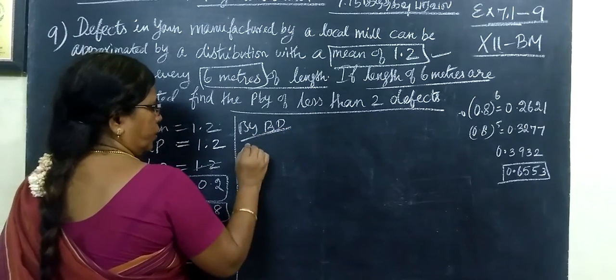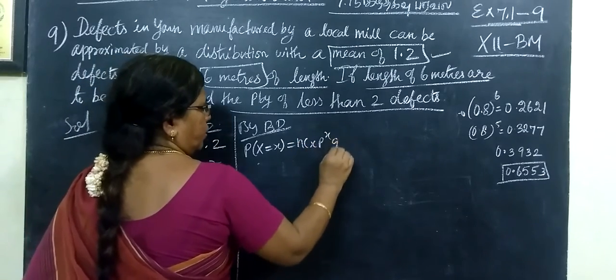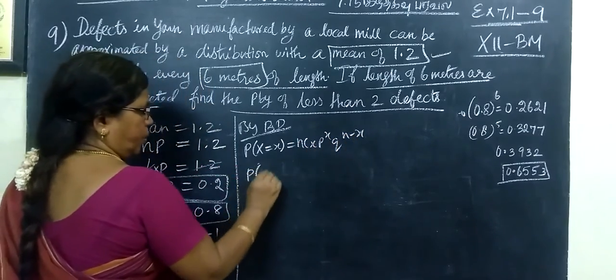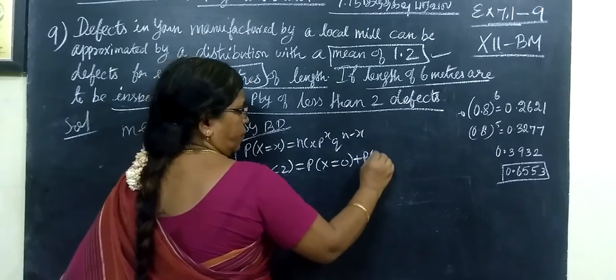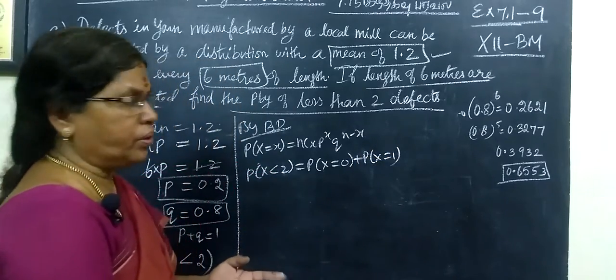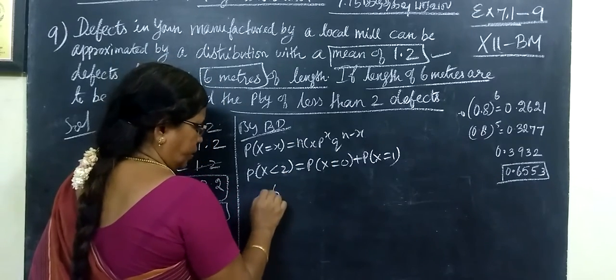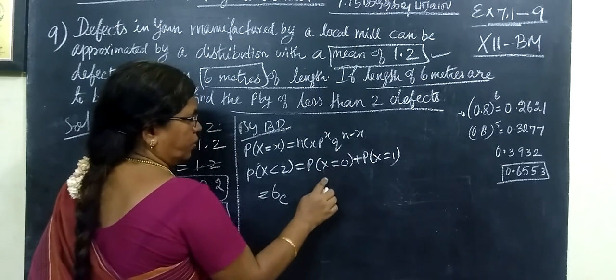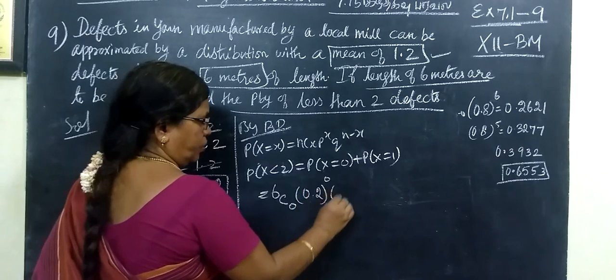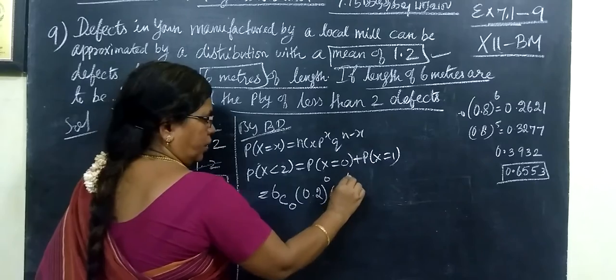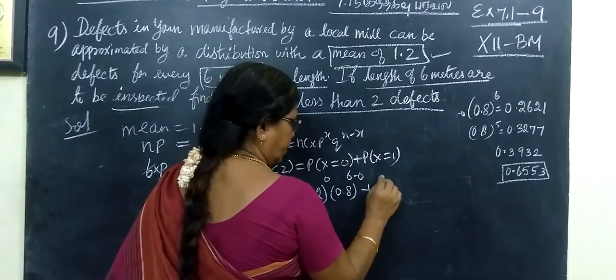P of x, less than 2, means 0 and 1. So P of x equals 0 plus P of x equals 1. P of x equals 0, then nCx, so x equals 0, so here you write 0, then p 0.2 power 0, then 0.8 to the power 6 minus 0, n minus x.